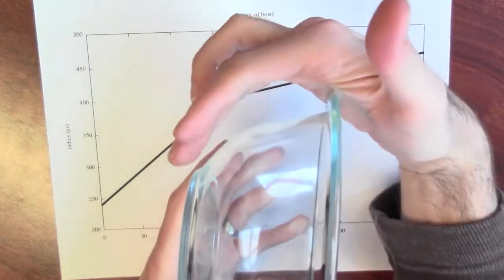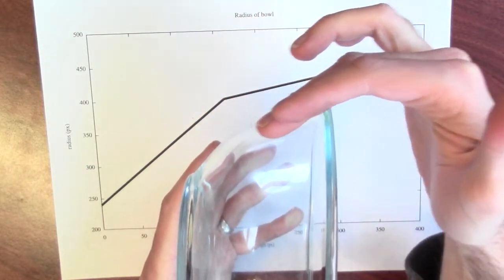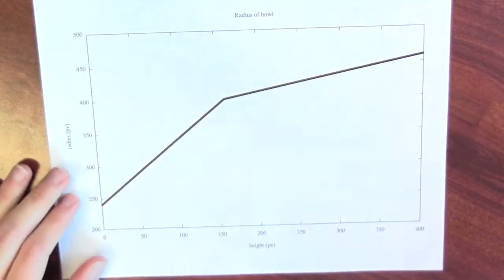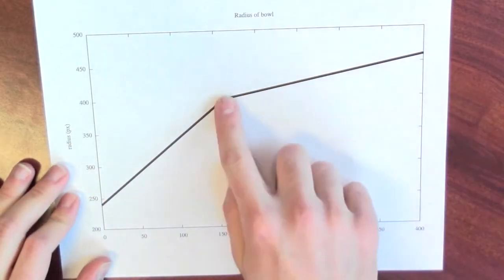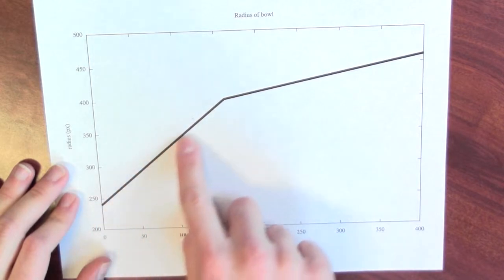And if you look at the bowl, the bottom of the bowl starts off very slanted, and then it sort of flattens out. And that's exactly what I'm representing here with this broken line. The bowl starts off fairly slanted, and then flattens out.